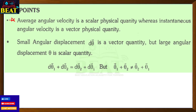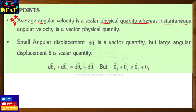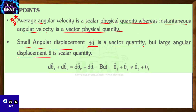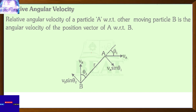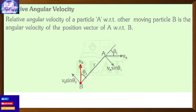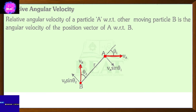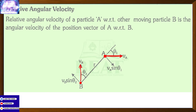Important objective points to remember: average angular velocity is a scalar quantity, while instantaneous angular velocity is a vector quantity. Small angular displacement is a vector quantity, but large angular displacement is a scalar quantity. These facts are directly asked in objective exams.